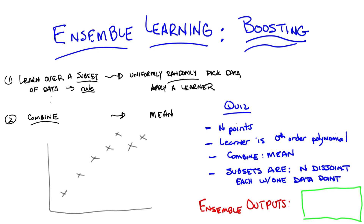So here's a quiz for you, Michael. Here's the setup. You ready? You've got n data points. The learner that you're going to use over your subsets is a zero-order polynomial. The way you're going to combine the output of the learners is by averaging them, so it's just what we've been talking about so far. And your subsets are going to be constructed in the following way: you uniformly randomly pick them and you end up with n different subsets. They're disjoint and each one has a single point in it that happens to be one of the data points.